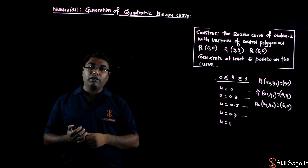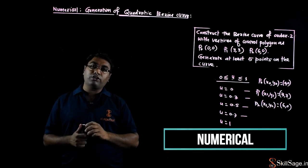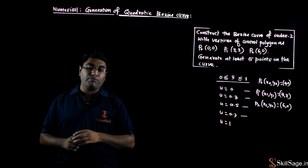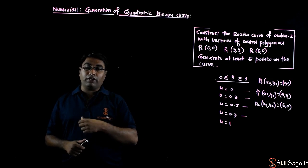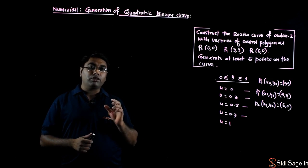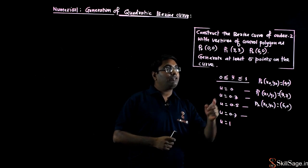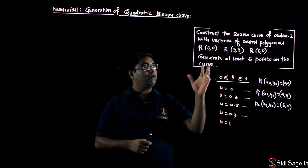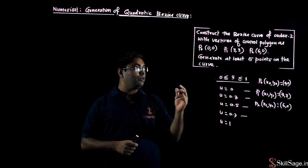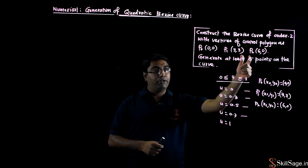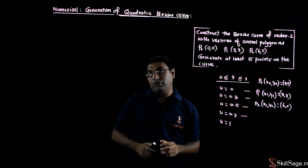Now we will see one numerical related to rasterization or generation of a quadratic Bezier curve. We generate a quadratic Bezier curve — this is related to a numerical. Construct a Bezier curve of order 2 with vertices of control polygon as P0(0,0), P1(3,3), P2(6,0), then generate at least 5 points on the curve.